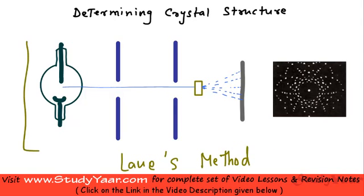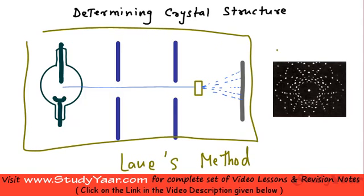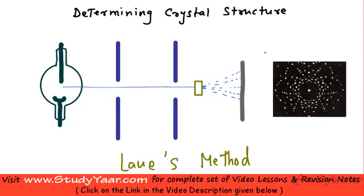This is a basic diagram representing Laue's method for analyzing a crystal structure. You have an X-ray tube emitting X-rays. These X-rays are turned into a very fine beam by using lead sheets.